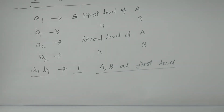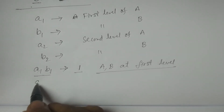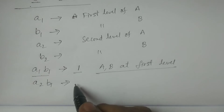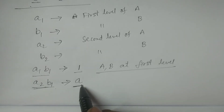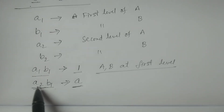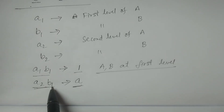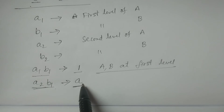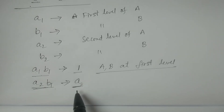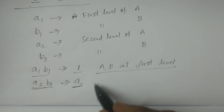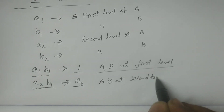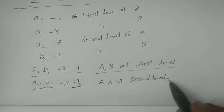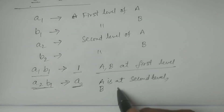The second combination: A2, B1 is indicated by 'a'. Why? Because A is at second level, therefore we represent A. B is at first level, therefore we do not write B — the absence of B indicates first level. So 'a' means factor A is at second level and factor B is at first level.